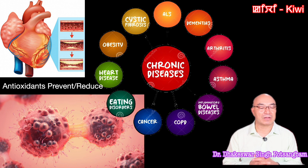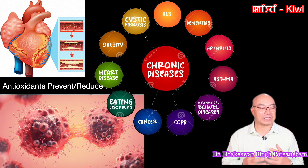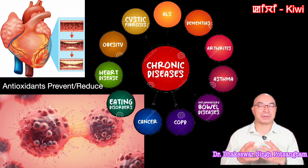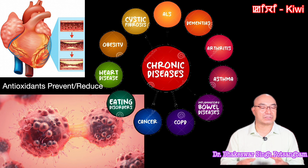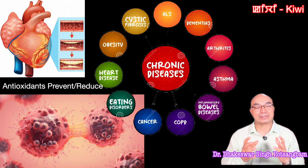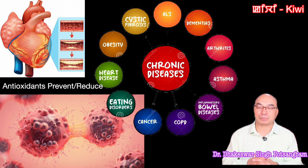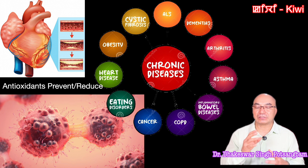Free radicals are linked to chronic diseases such as heart disease, diabetes, cancer, asthma, arthritis, intestinal disease, lung COPD, dementia, and cystic fibrosis. Antioxidant properties from vitamin C and E help fight free radicals and protect against these diseases.